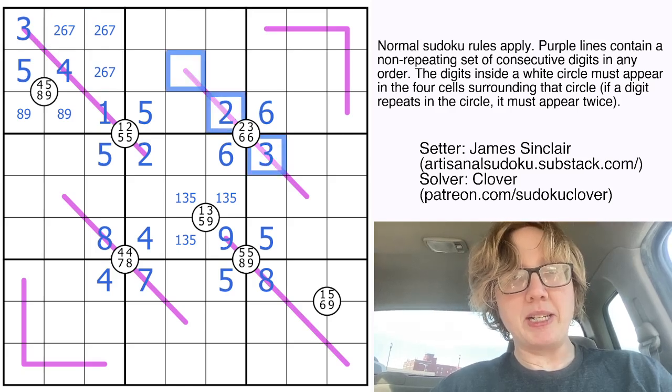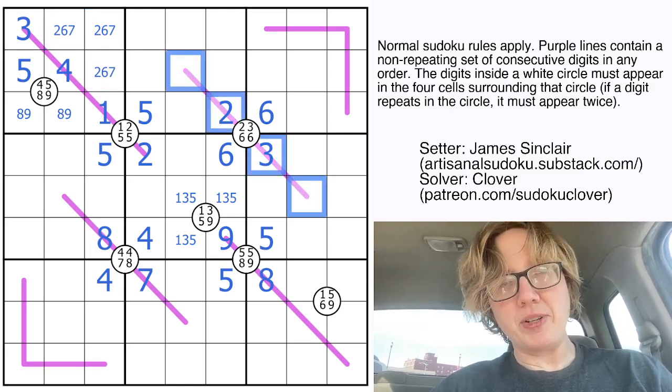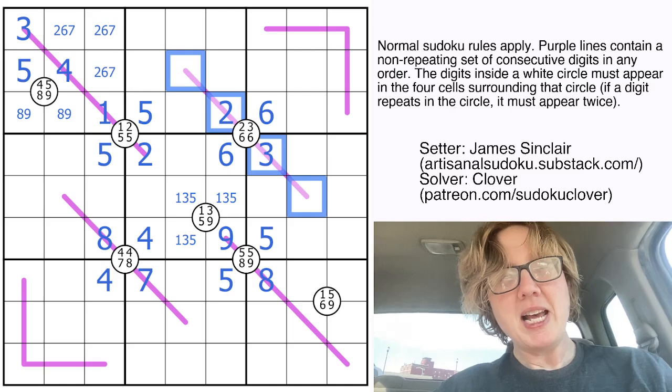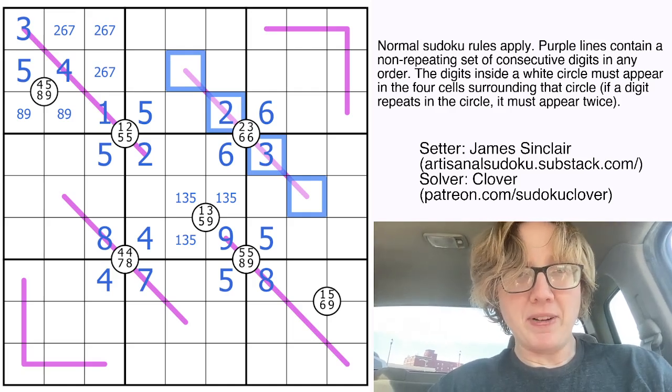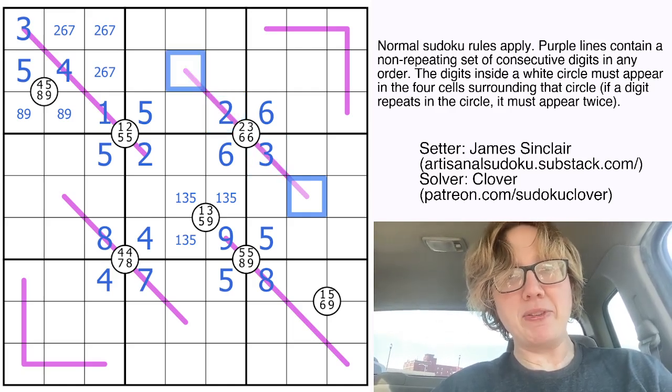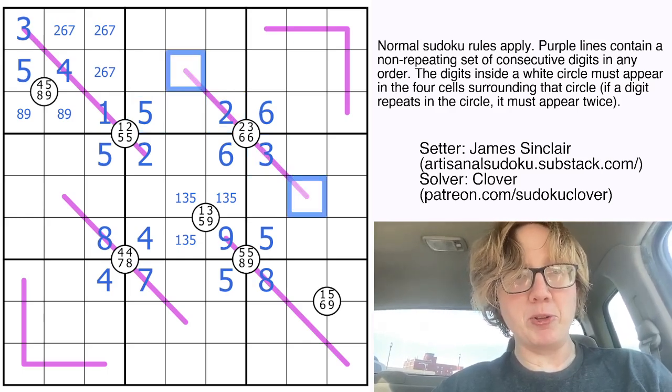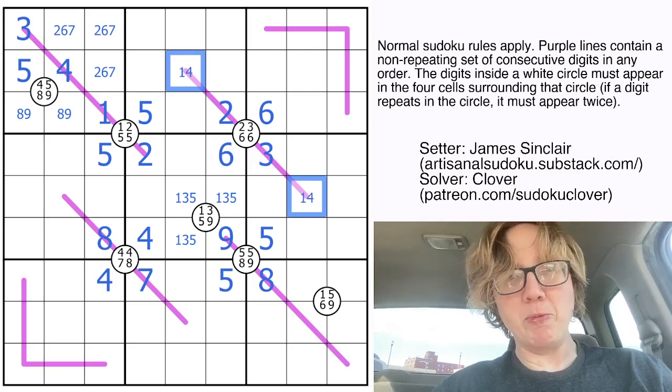Now along this run band line, there are actually two options at this point. It could be either 1, 2, 3, 4, or 2, 3, 4, 5. But in order for it to be 2, 3, 4, 5, we would have to have a 5 in one of these cells. And 5 is already eliminated from both of them. So this will be 1, 2, 3, 4, making these a 1, 4 pair.